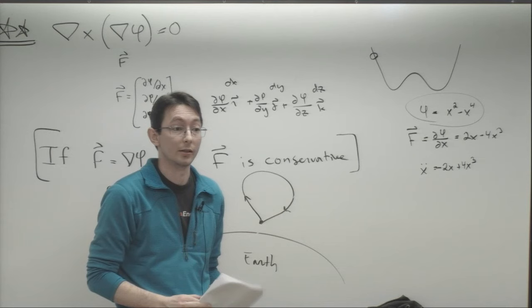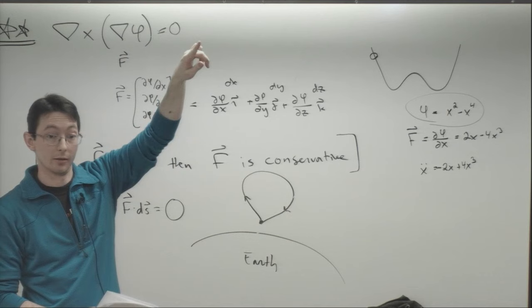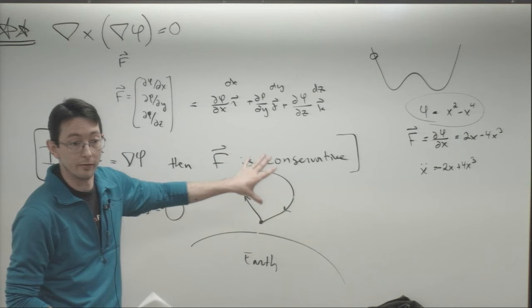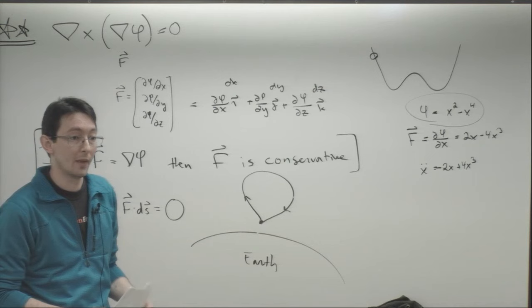We'll talk a lot more about this. I recommend coding up the hypocycloid in MATLAB, plotting it, and numerically computing the contour integral F · (dx, dy) to verify you get 3πa²/8. Start thinking about conservative vector fields — this will be really important later. Have a great Thanksgiving; I'll see you in about a week. Bye.